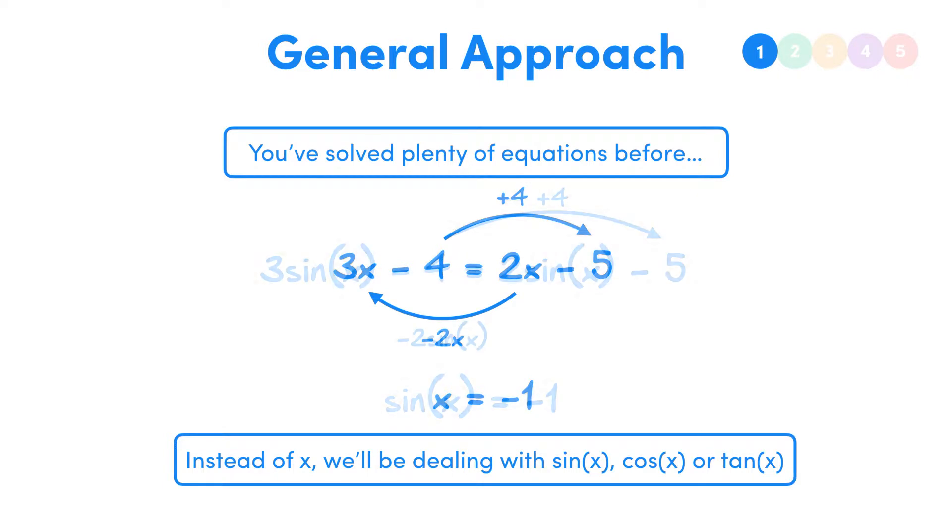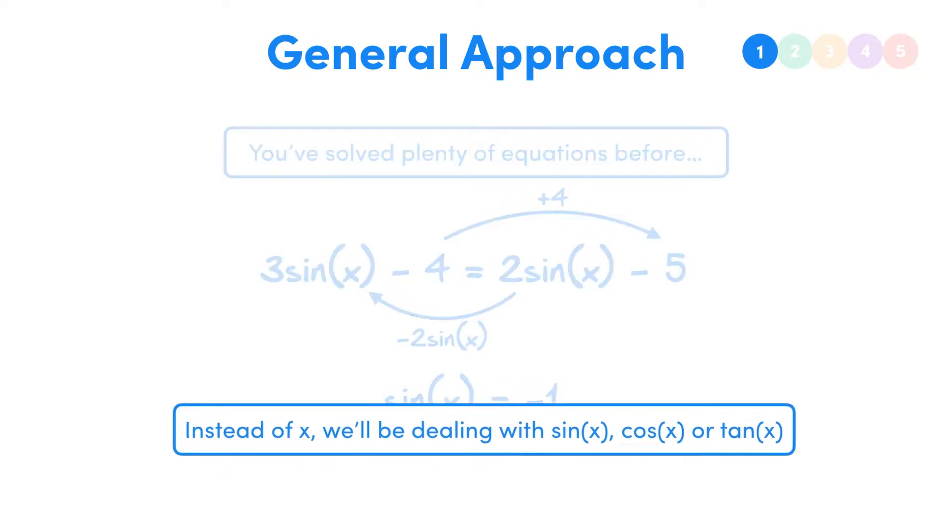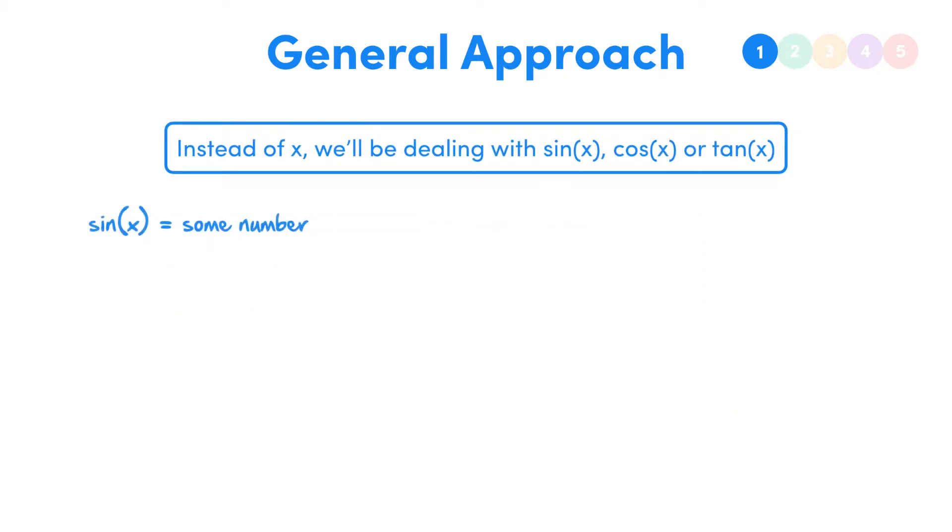Or maybe you'll have a combination, but that doesn't make it any different for you, just solve it as normal, and then once we get to sin x equals some number, we know how to solve that, with reference angles and the like.